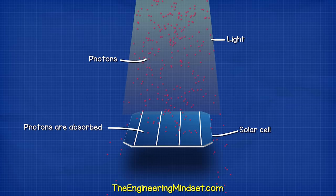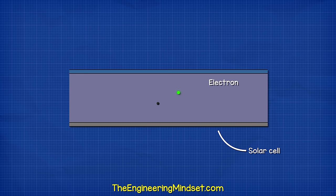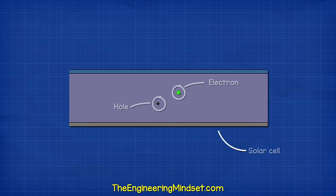Light is basically just lots of particles called photons. The solar cell absorbs these photons. When they hit the solar cell, they knock another particle called an electron out of the solar cell, leaving a hole behind. This is the photovoltaic effect.